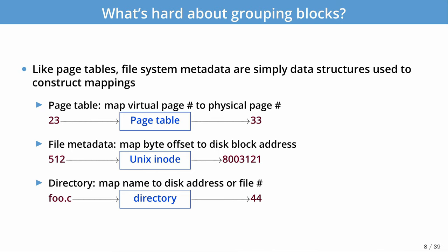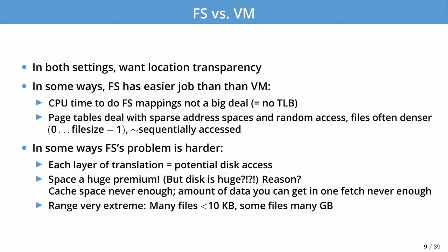A directory, which is usually just a special type of file, provides mappings from file name to an inode number. Both the file system and virtual memory provide location transparency — we don't want the user or program to know about the physical layout on disk; that should be mostly transparent so they can focus on higher-level problems. The layout, however, can have a big performance impact.